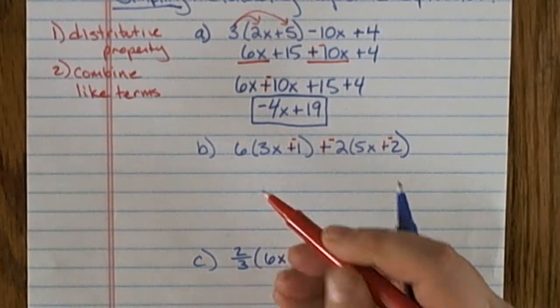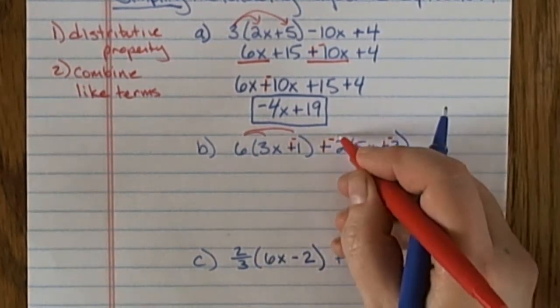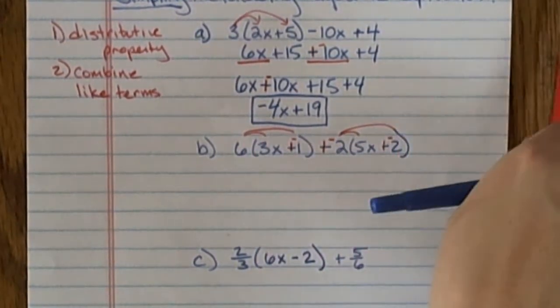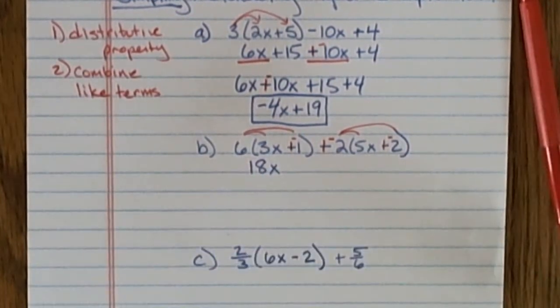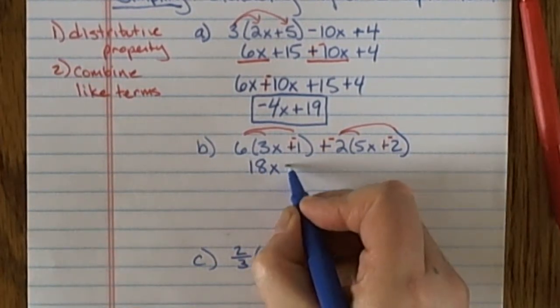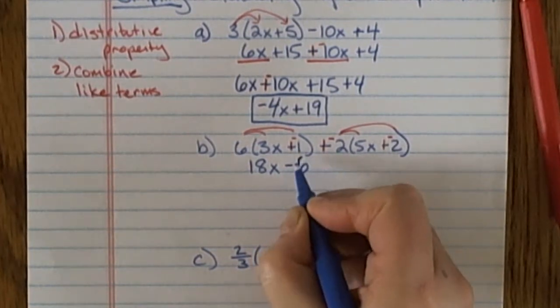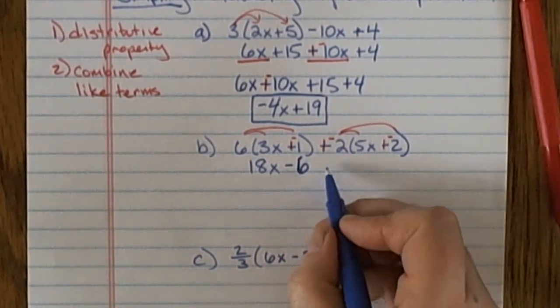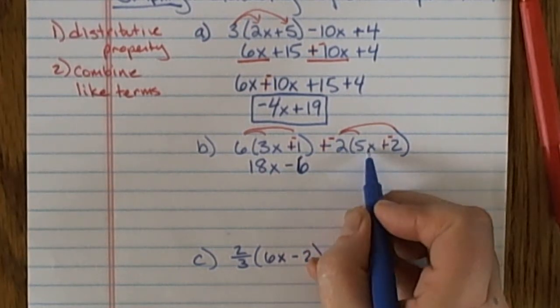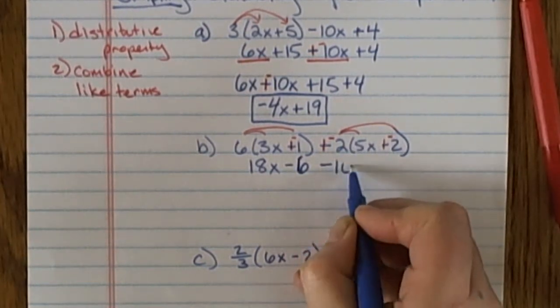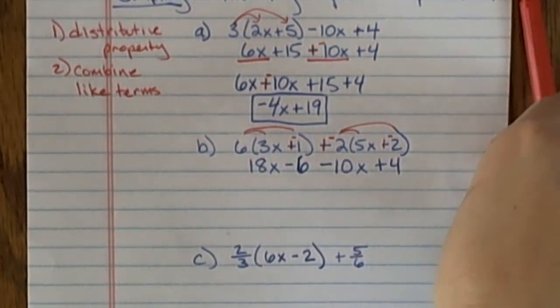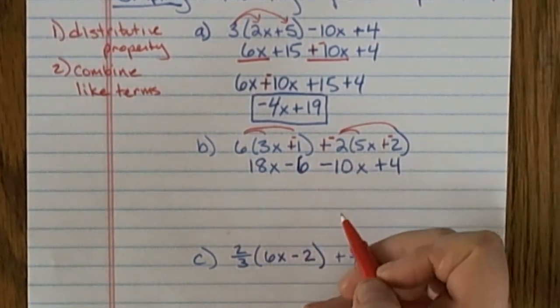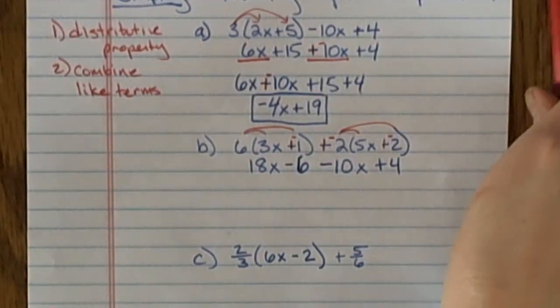As I distribute, 6 is going to multiply by both of those terms and negative 2 by both of those. So 6 times 3x is positive 18x, and then I have 6 times minus 1, which is negative 6. I could also write plus a negative 6. Also, I have negative 2 times 5x, which is negative 10x, and negative 2 times negative 2 is positive 4. If you'd rather write plus the opposite in each of these places, that is exactly equivalent.